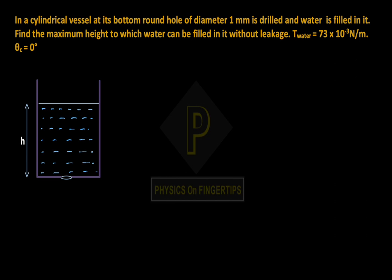Our question is: in a cylindrical vessel at its bottom, a round hole of diameter 1 mm is drilled and water is filled in it. Find the maximum height to which water can be filled in it without leakage.